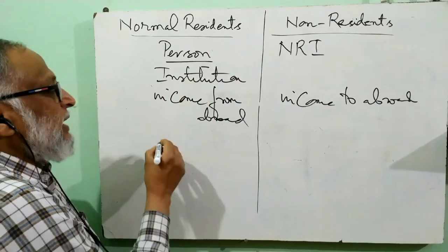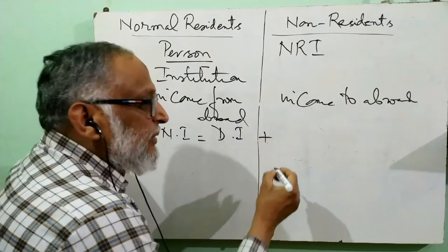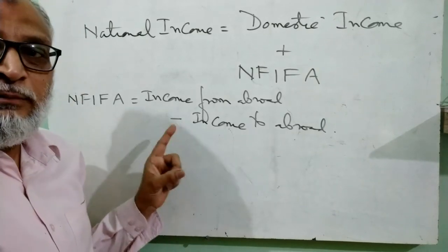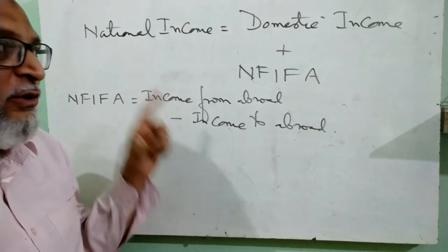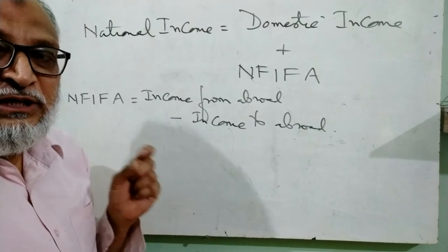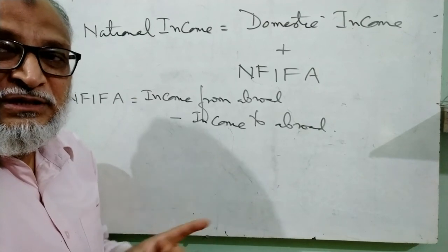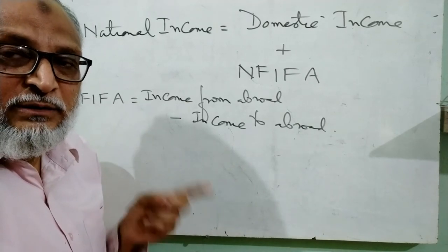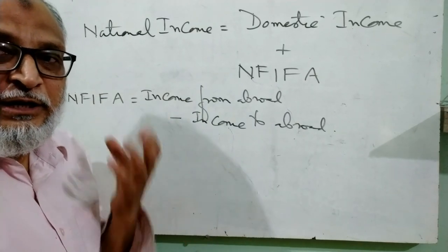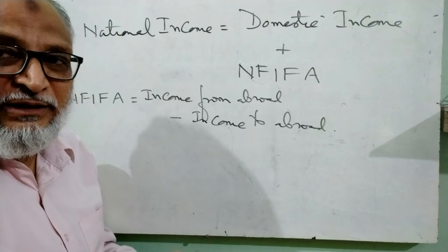So when we calculate the national income of a country: we take domestic income and add net factor income from abroad. Net factor income from abroad equals income from abroad minus income to abroad. When we add net factor income from abroad to domestic income, we get the national income of the country. The key point to remember: whenever we calculate national income, keep the concept of normal resident in mind; whenever we calculate domestic income, keep the concept of domestic territory in mind. The difference between domestic income and national income is net factor income from abroad — we add income of normal residents of India and subtract income of non-residents from India.